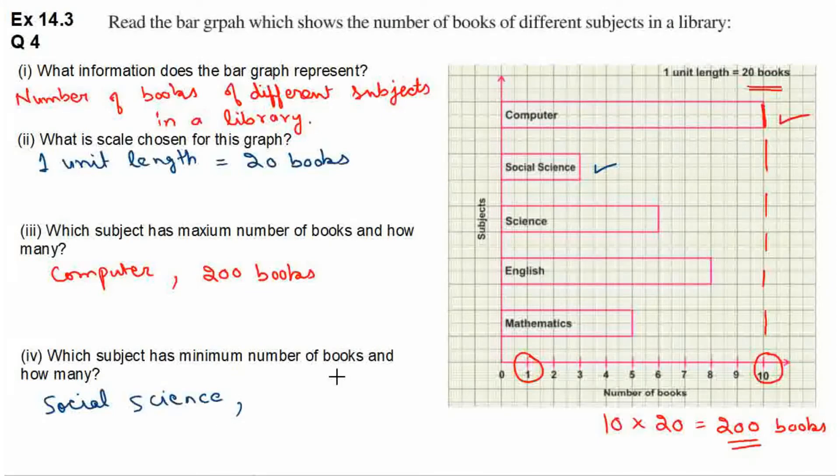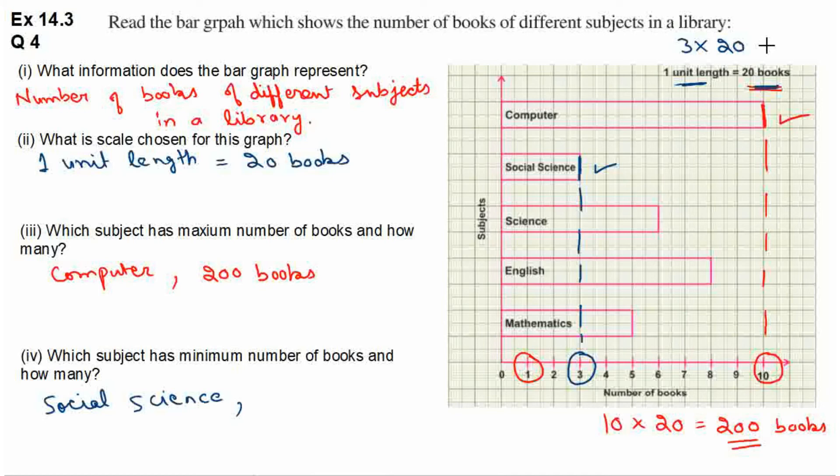Ab hum dekhenge ki social science ki kitne books hai. So social science ka jo bar hai woh yahaan horizontal line pe 3 ki marking ko point kar raha hai. So 3 ki marking kitne number of books ko represent karegi? 3 multiply by 20. Because one unit length is equal to 20 books. So 3 into 20 is 60. So yahaan par hum likh denge 60 books.